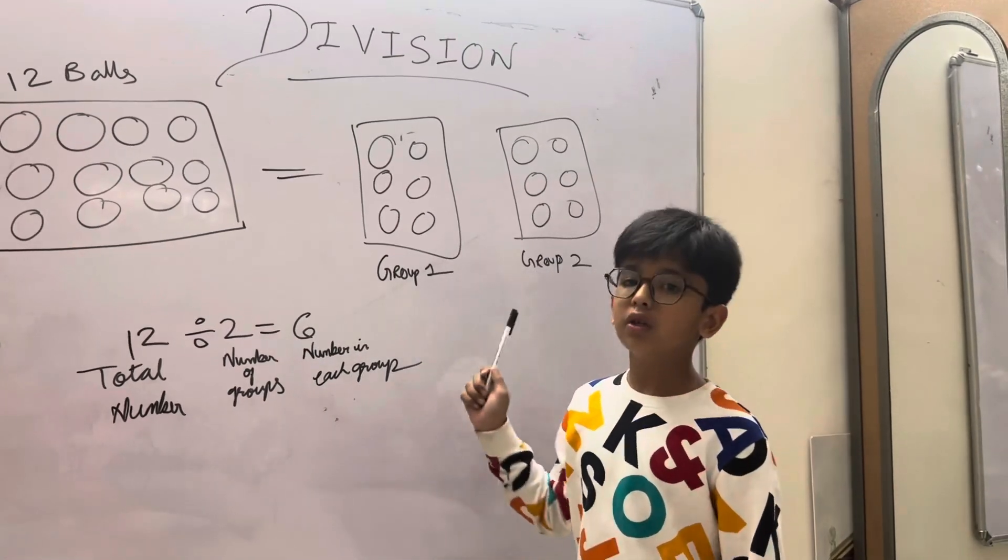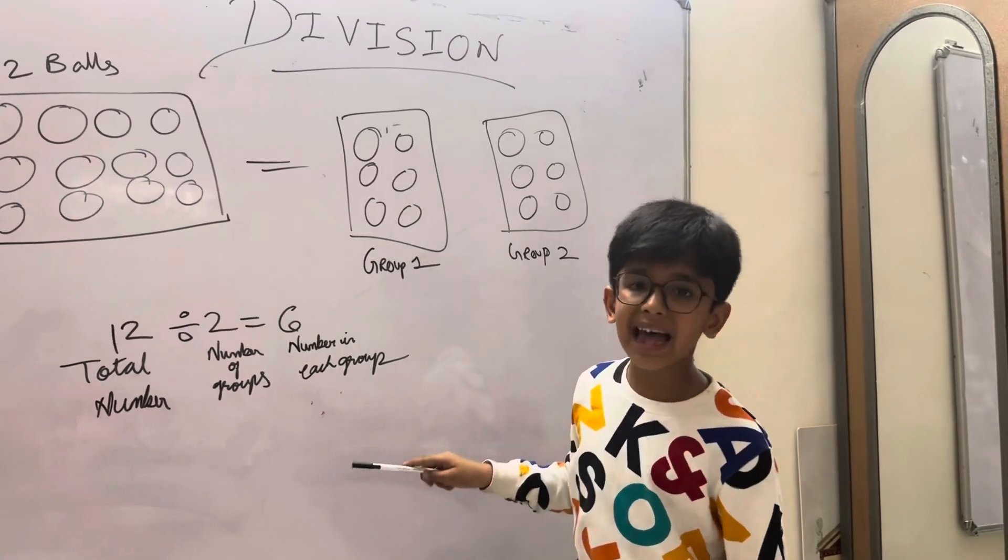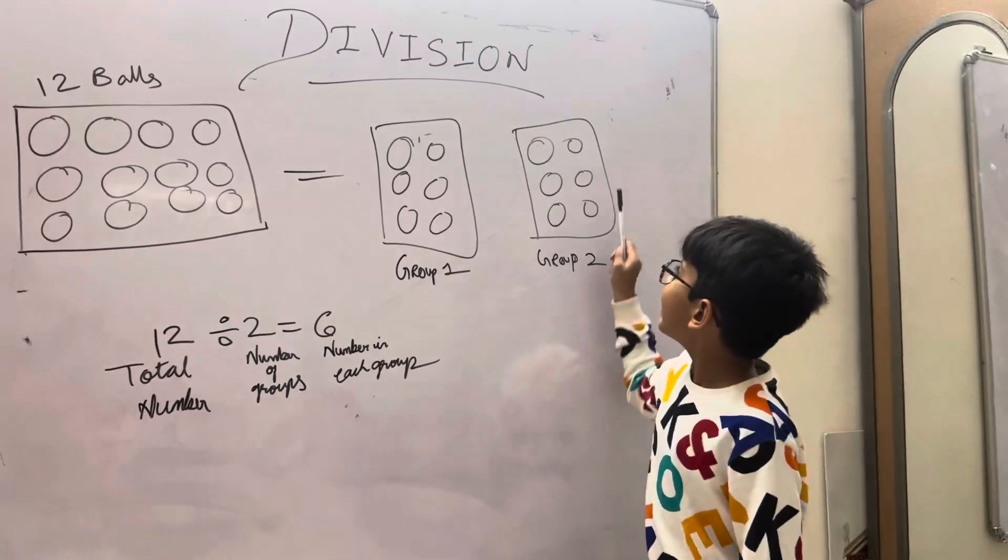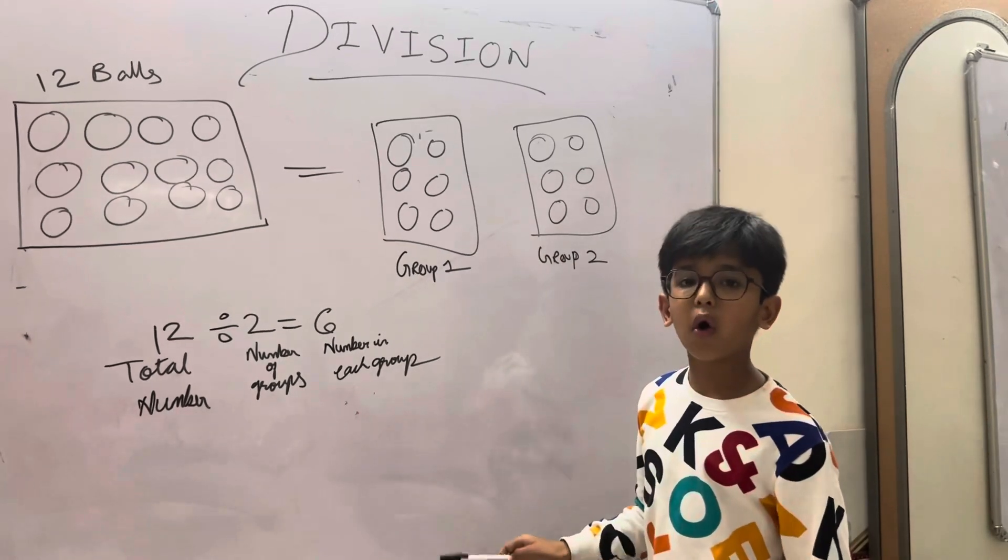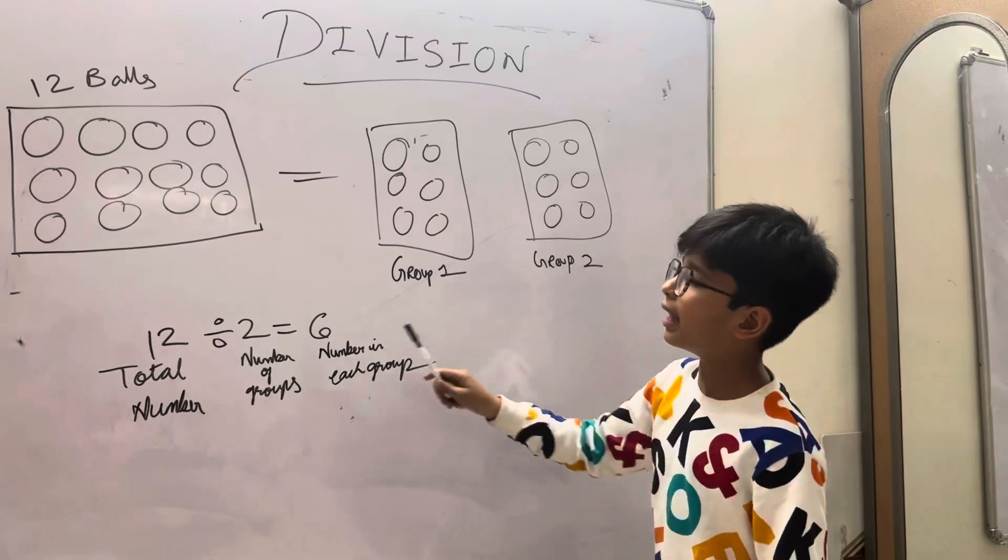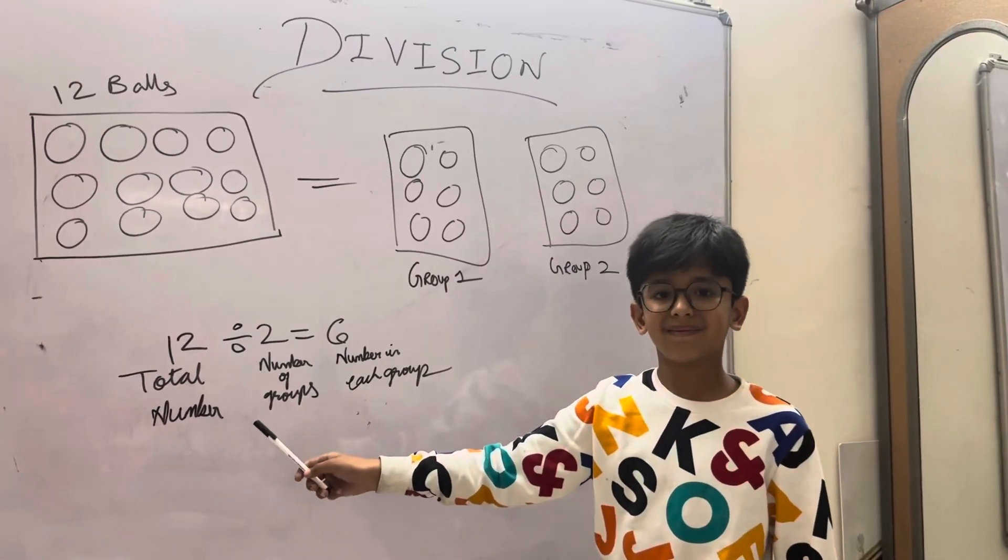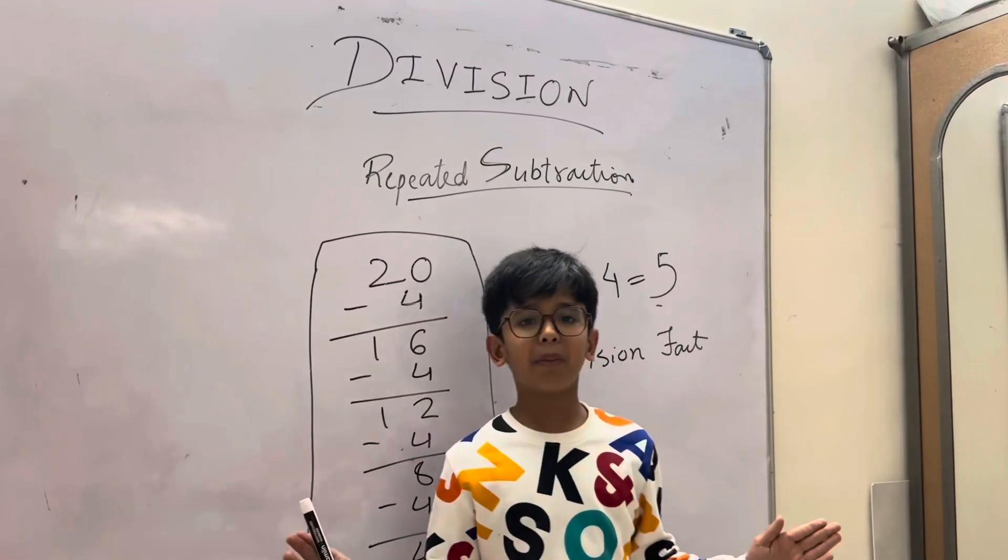So its answer is in one group, six balls are there. Second, same in second group, we have to also divide 12 divided by 2 equals 6. Then plus them, the answer is 12. Repeated subtraction.